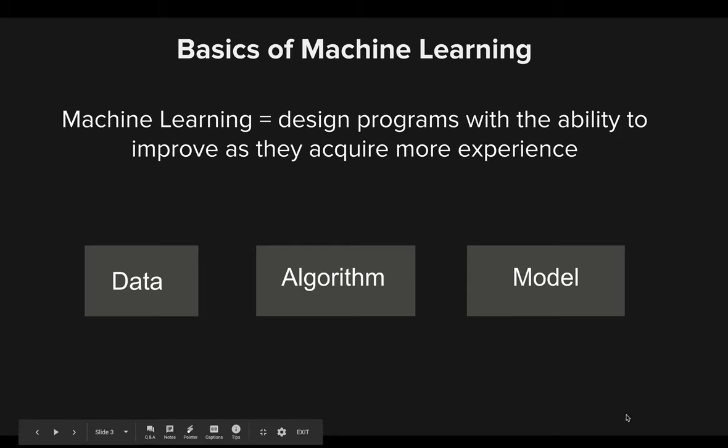So what is machine learning? This term gets thrown around a lot, and there's no one clear definition. But machine learning is simply the ability to design programs that improve as they acquire more experience. At the basic level, machine learning is really just about predicting the future based on the past. Any machine learning algorithm requires pre-existing data or feature data from the past in order to create predictions and high-level actions in the future.